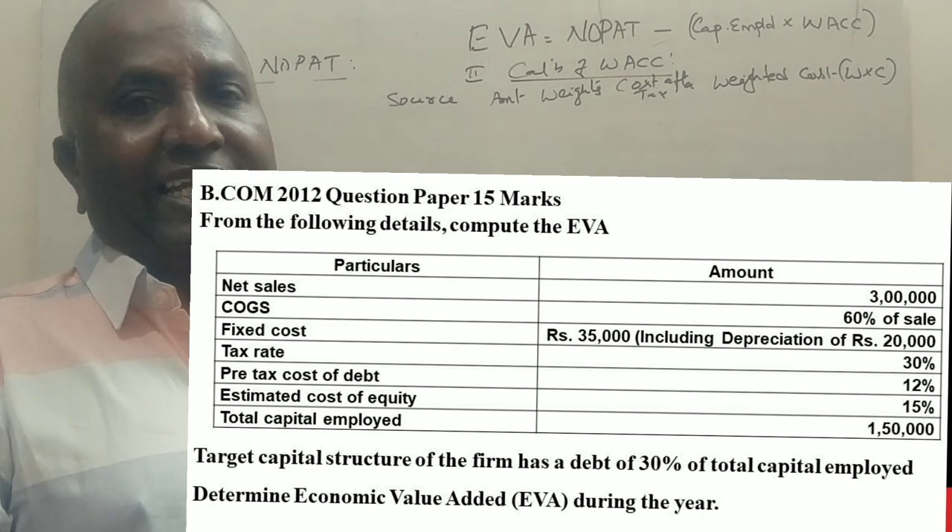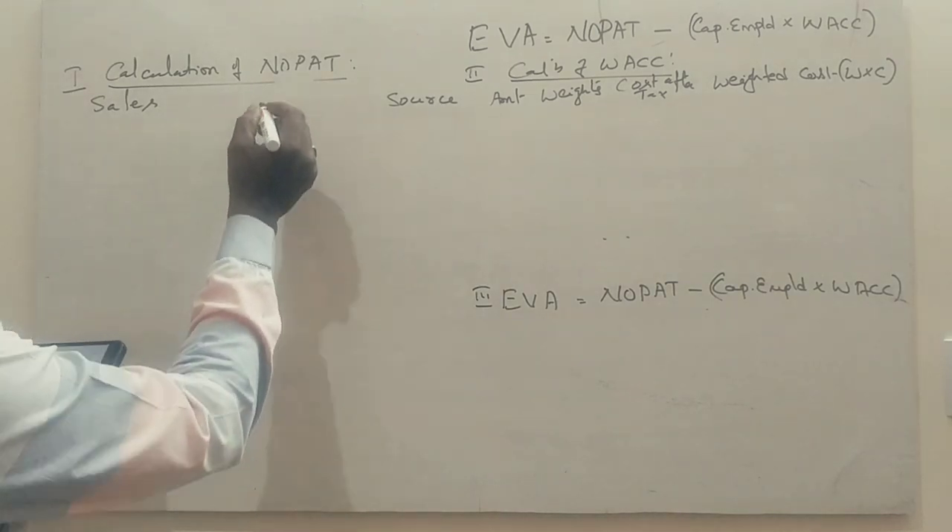Target Capital Structure of the firm has a debt of 30% of total capital employed. Here again, we will follow the same approach. First, Calculation of NOPAT.